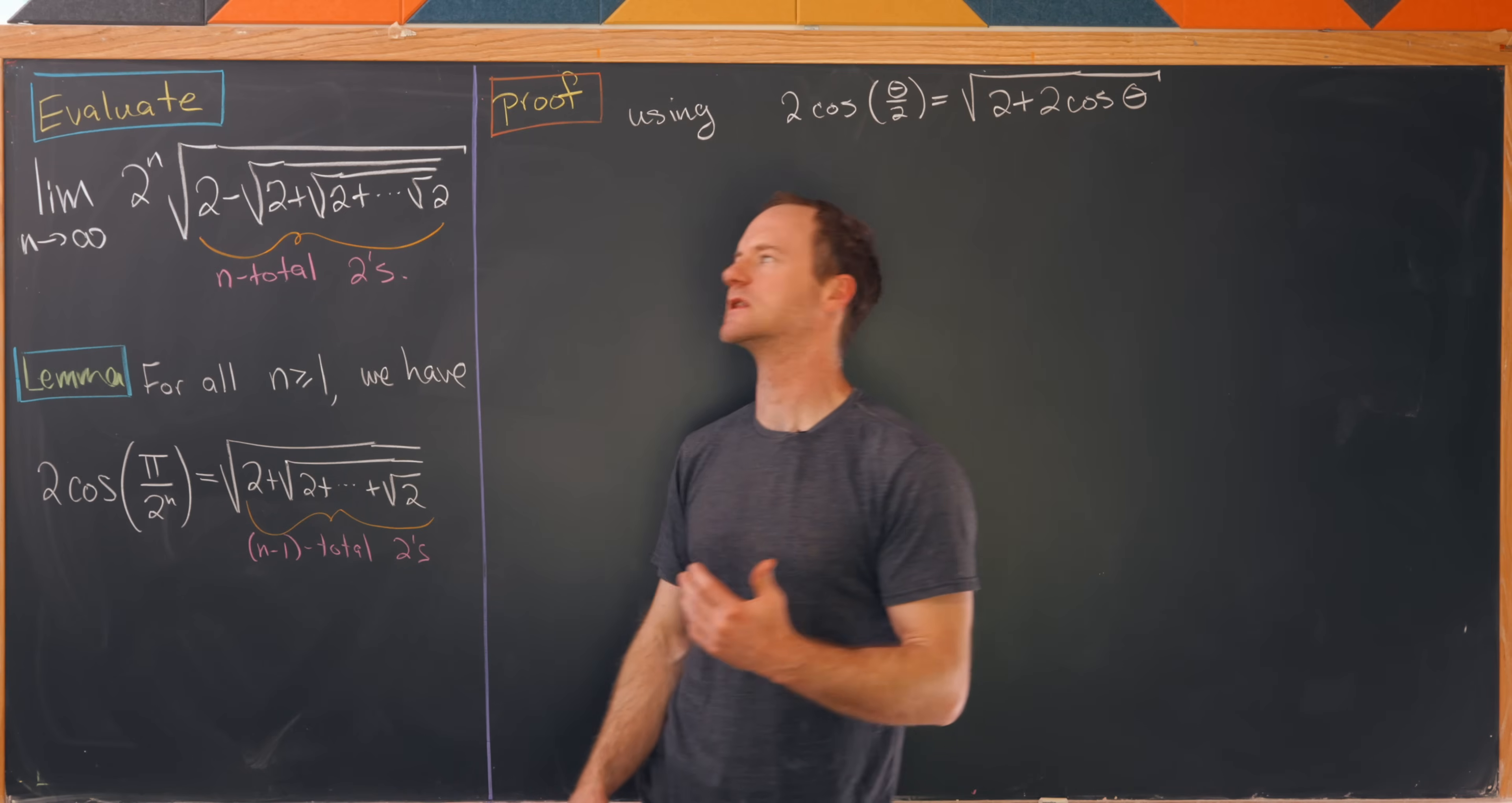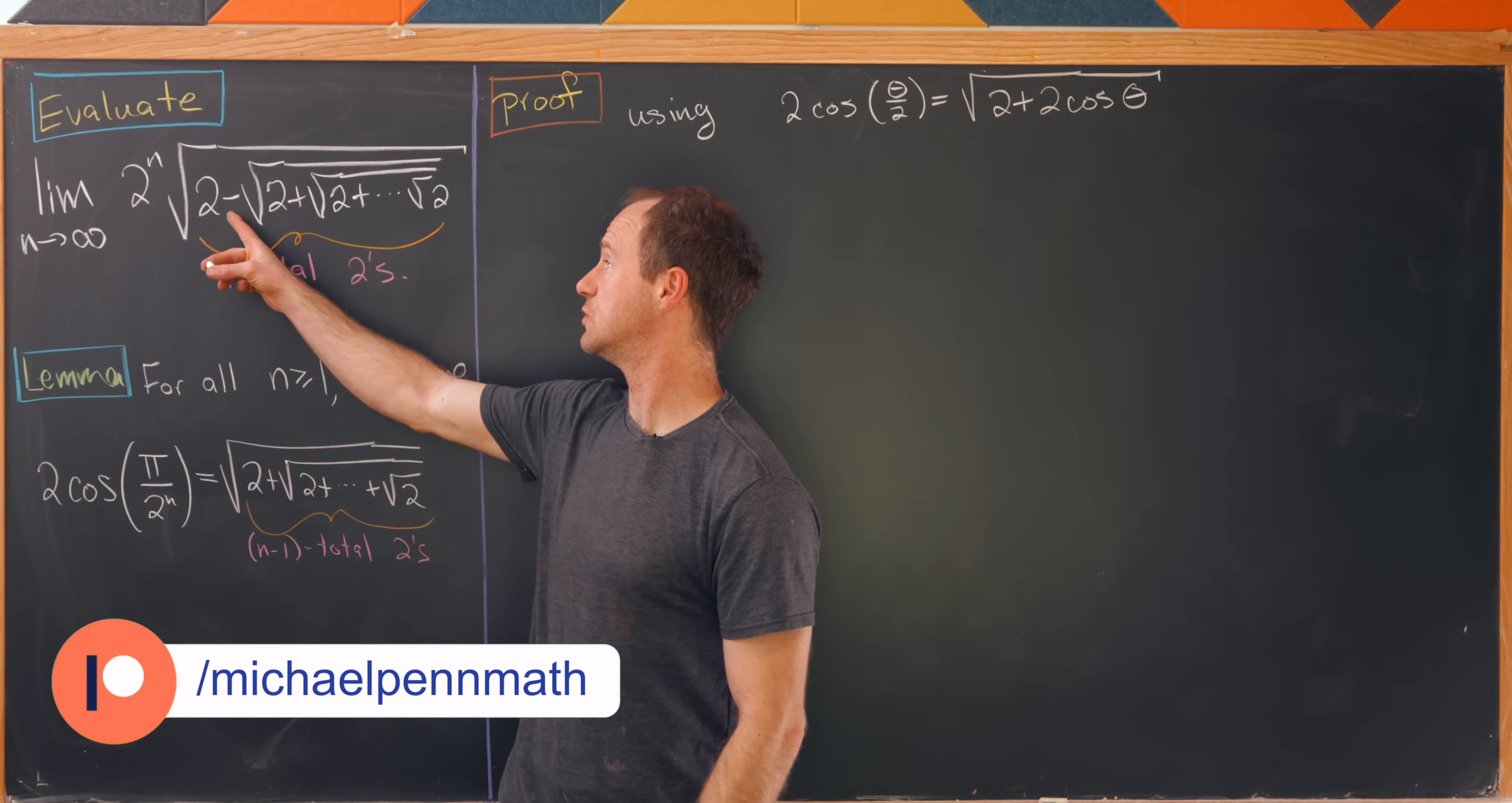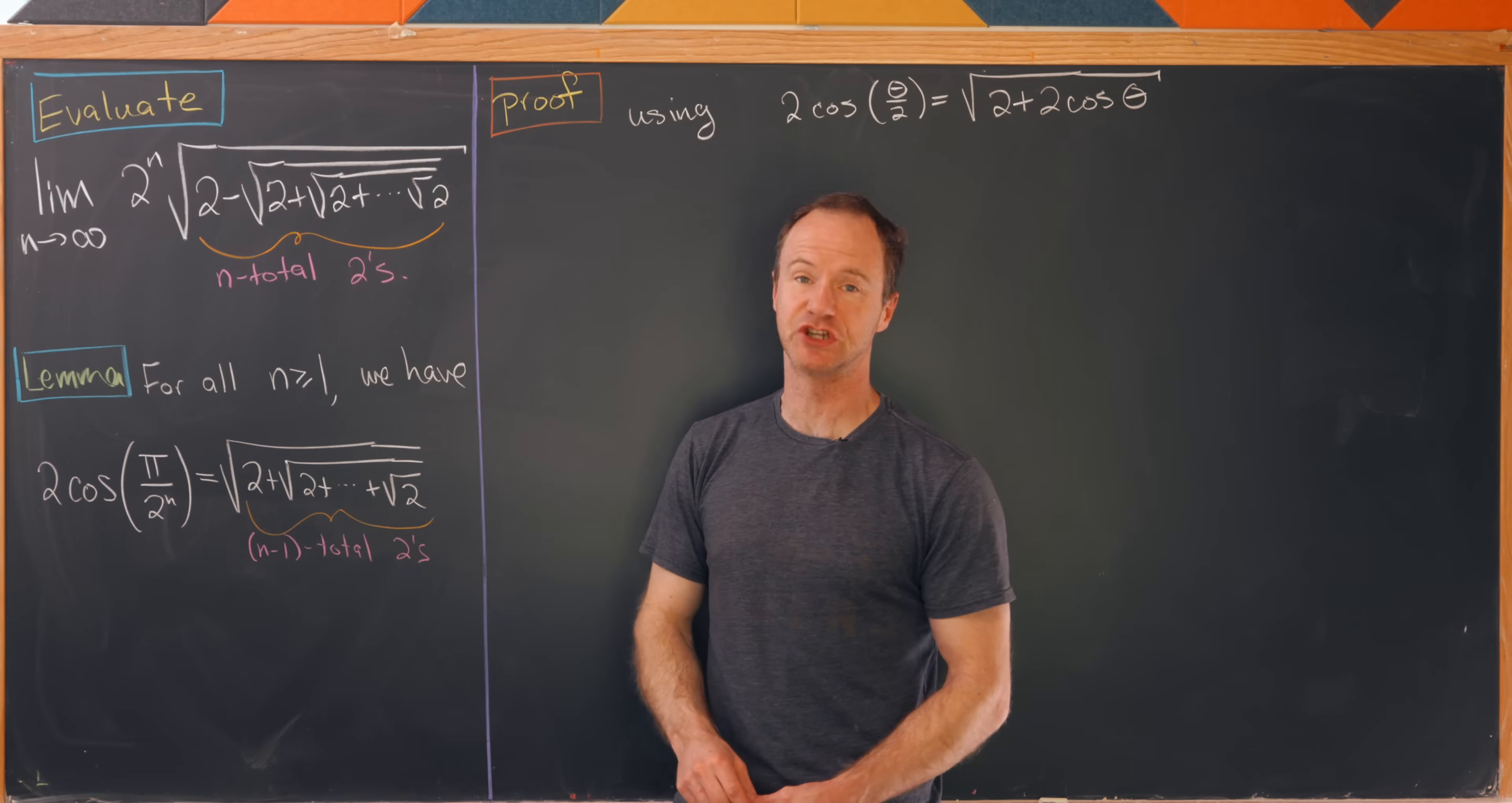Today we're going to look at a really interesting limit that has some hidden geometry that we will uncover. The limit that we'd like to evaluate is the limit as n goes to infinity of 2 to the n times the square root of 2 minus the square root of 2 plus the square root of 2 all nested until we end with a final square root of 2 where there are n total twos.